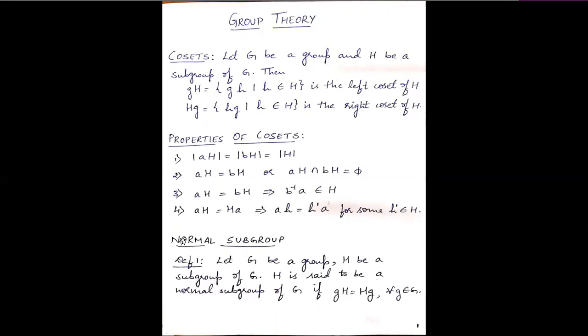Now let us look at the next definition, that is a normal subgroup. Definition one: let G be a group and H be a subgroup of G. H is said to be a normal subgroup of G if gH is equal to Hg for all g belonging to G. That is, H is said to be normal if the left coset is equal to the right coset.